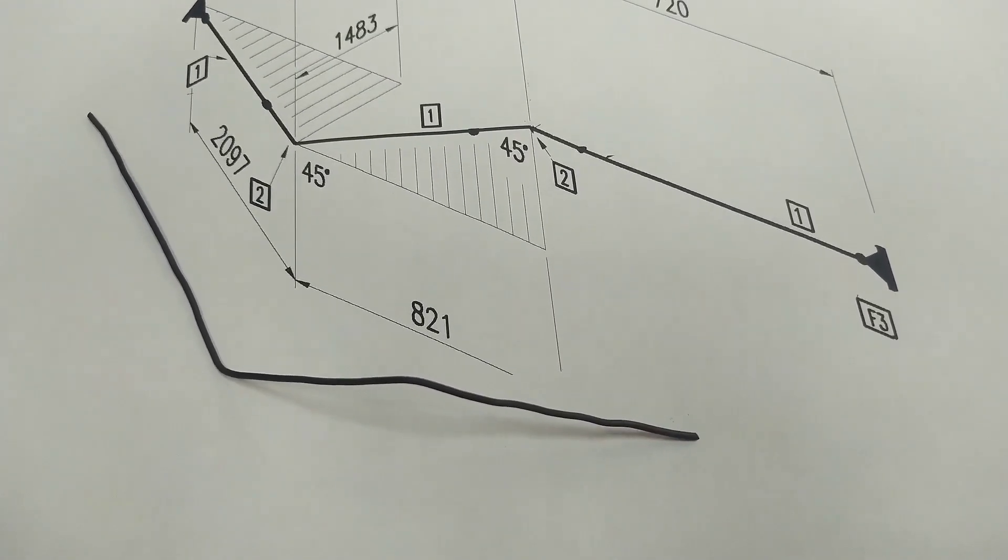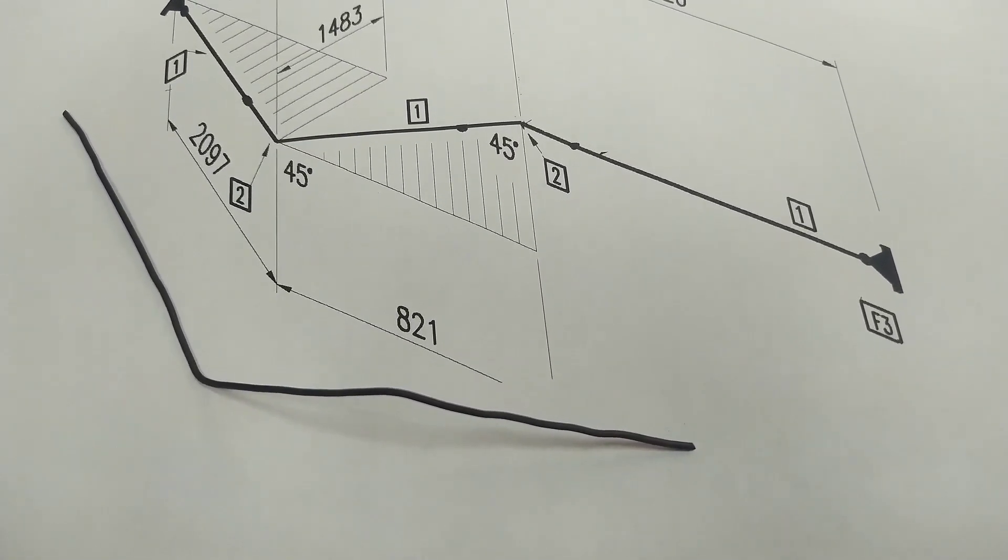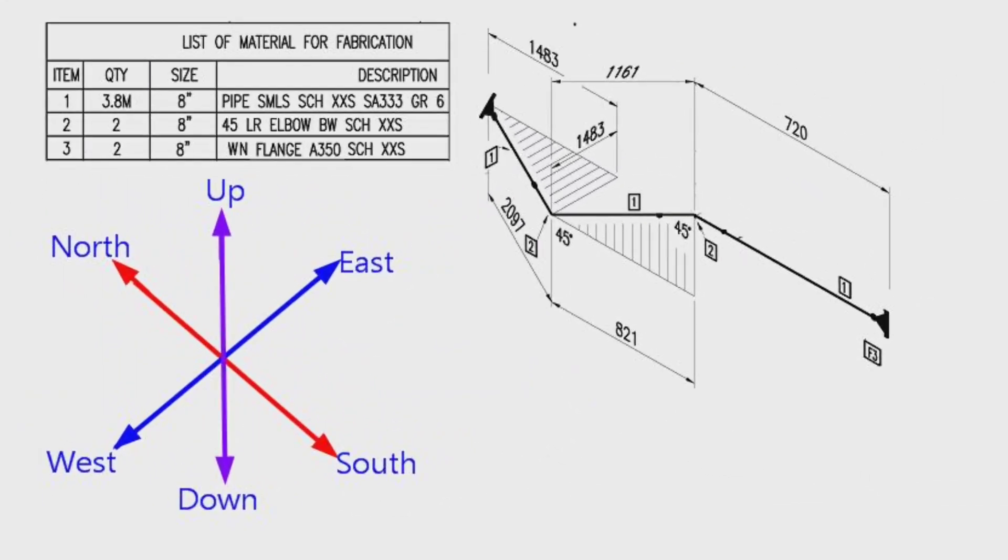If you watch the video until the end, I am sure it will be very useful for you. Let's start the piping tutorial video. This is the pipe isometric drawing. This pipeline consists of one spool only.